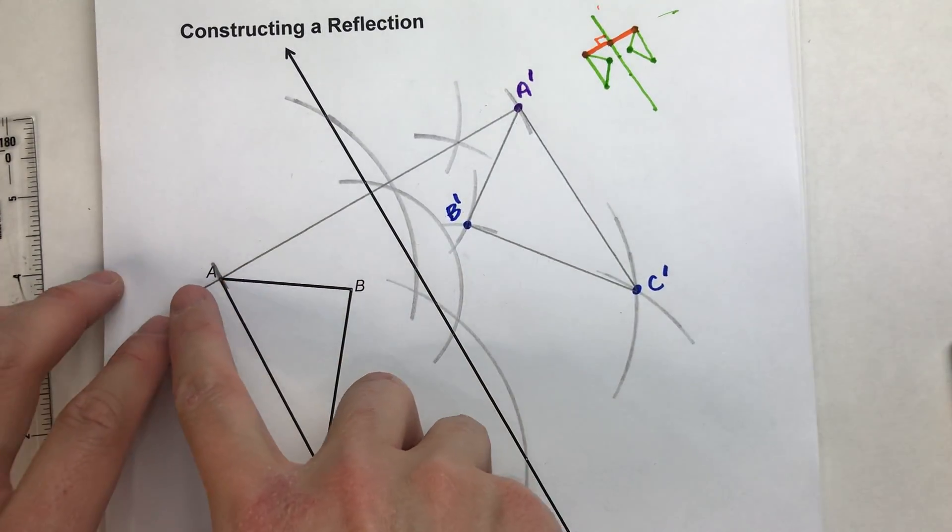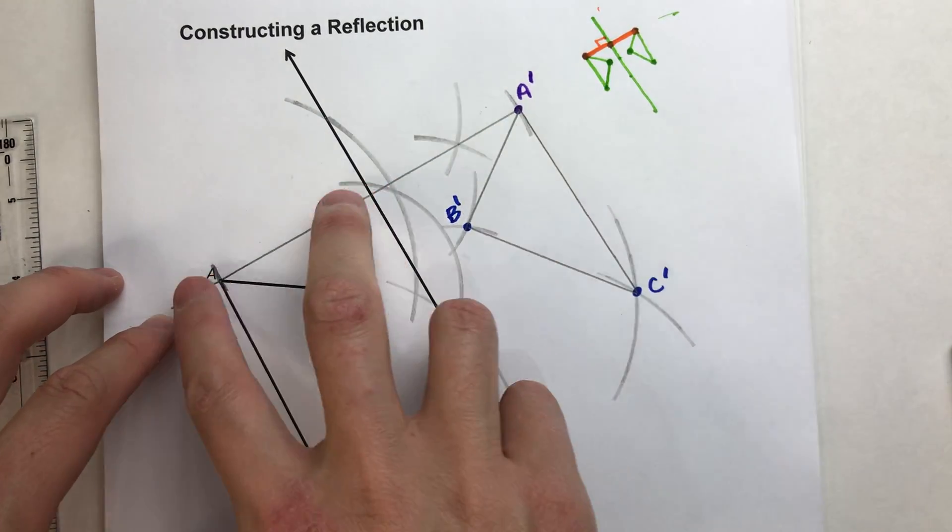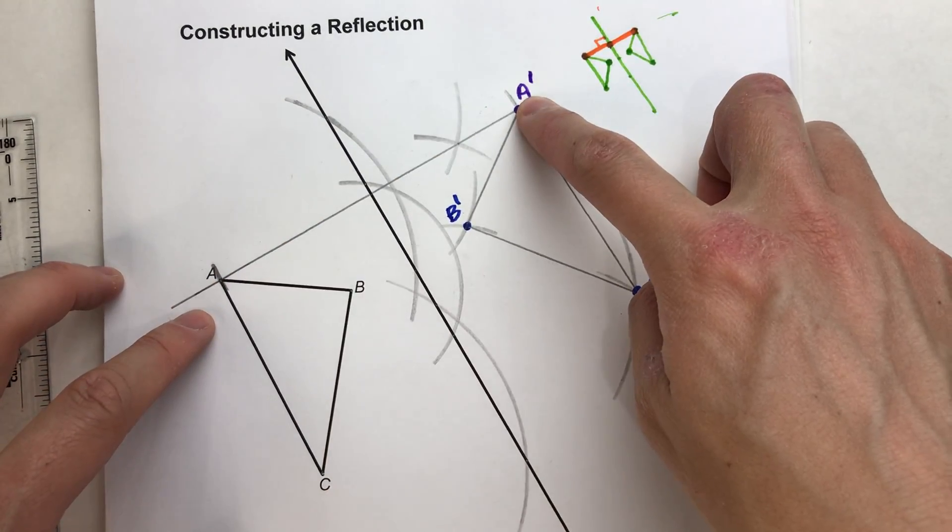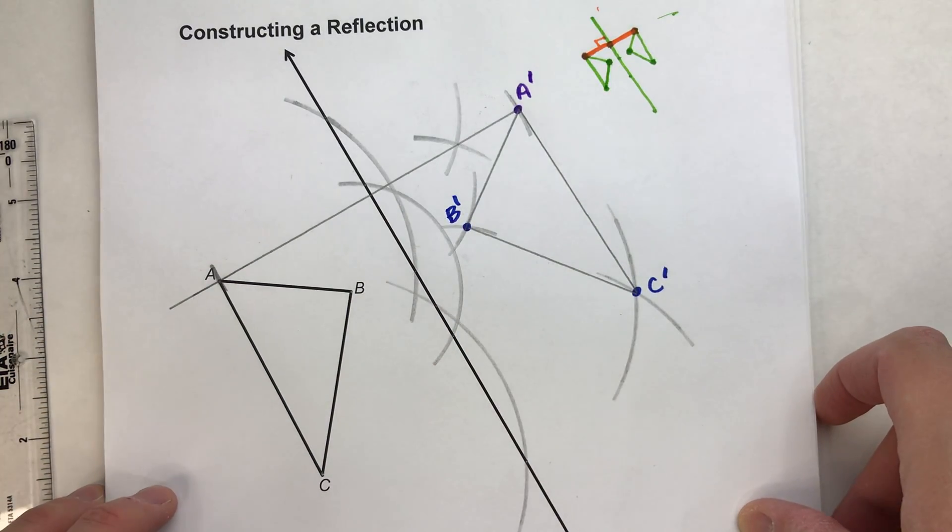So again, you can construct the perpendicular and then take this distance to be the same as this distance to find your reflection. Or use this faster method. It saves you a step or so.